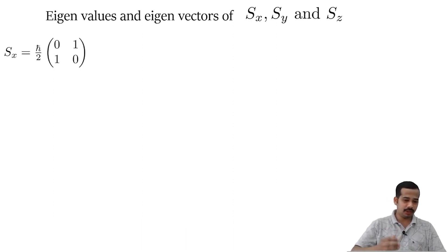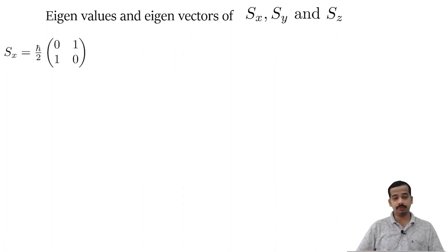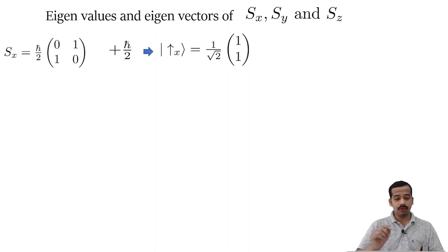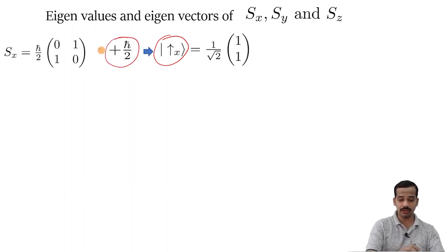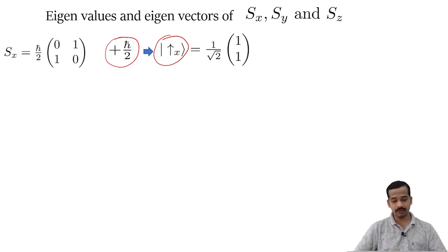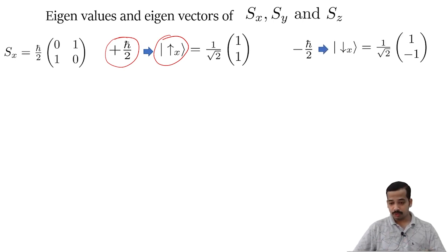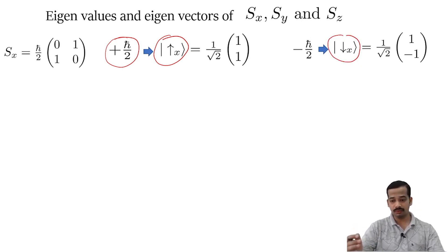The S-x matrix is (h-bar by 2) times [[0,1],[1,0]]. Its eigenvalues are plus h-bar by 2 and minus h-bar by 2. Corresponding to plus h-bar by 2, the eigenvector is spin-up-x equal to (1 by root 2)[1, 1]. Corresponding to minus h-bar by 2, the eigenvector spin-down-x equals (1 by root 2)[1, minus 1], where 1 by root 2 is the normalization factor.